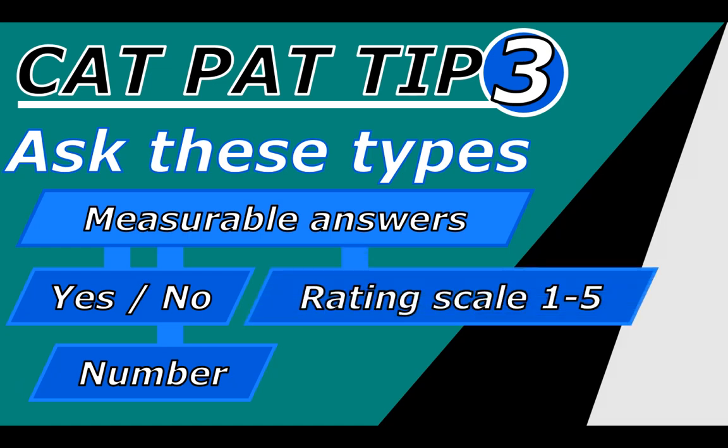Another option is rating scale questions — on a scale of one to five, where one means one thing and five means another. This is a good way to capture people's opinions numerically. You can also use a scale of one to four if you want to avoid people always selecting the middle option. When using a rating scale, make sure you indicate what each number means. This allows you to find the most commonly selected value — for example, the mode or the average.